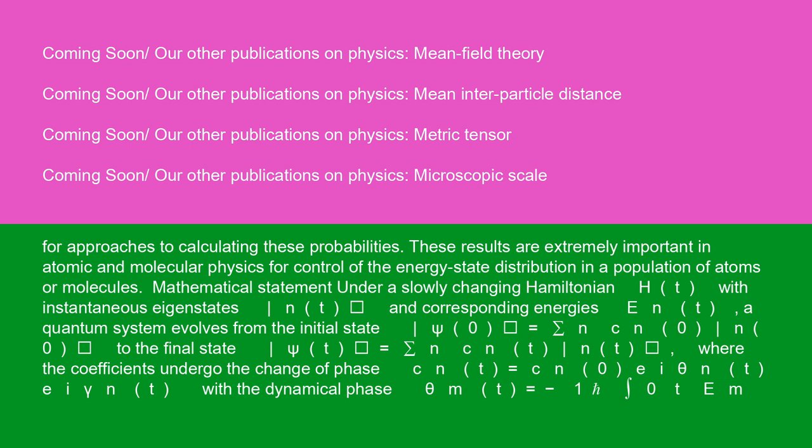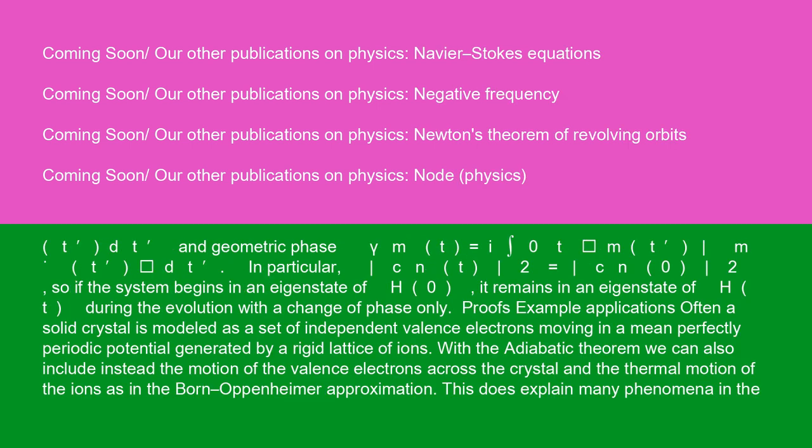Mathematical statement: under a slowly changing Hamiltonian H(t), with instantaneous eigenstates |n(t)⟩ and corresponding energies E_n(t), a quantum system evolves from the initial state |psi(0)⟩ = Σ_n c_n(0)|n(0)⟩ to the final state |psi(t)⟩ = Σ_n c_n(t)|n(t)⟩, where the coefficients undergo a change of phase: c_n(t) = c_n(0) * exp(i*theta_n(t)) * exp(i*gamma_n(t)), with dynamical phase theta_m(t) = -(1/ħ) ∫₀ᵗ E_m(t') dt' and geometric phase gamma_m(t) = ∫₀ᵗ ⟨m(t')|ṁ(t')⟩ dt'. In particular, |c_n(t)|² = |c_n(0)|². So if the system begins in an eigenstate of H(0), it remains in an eigenstate of H(t) during the evolution with a change of phase only.